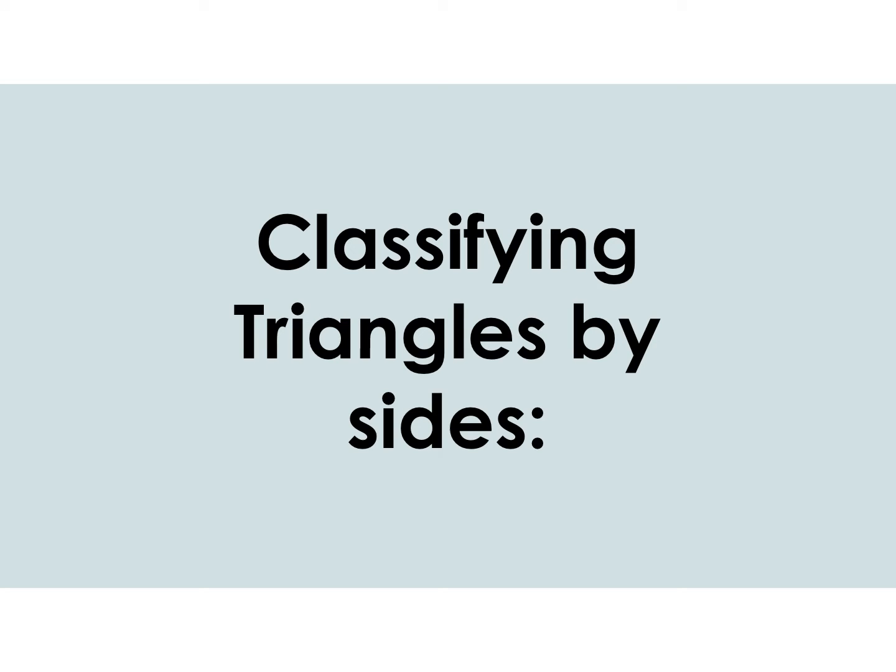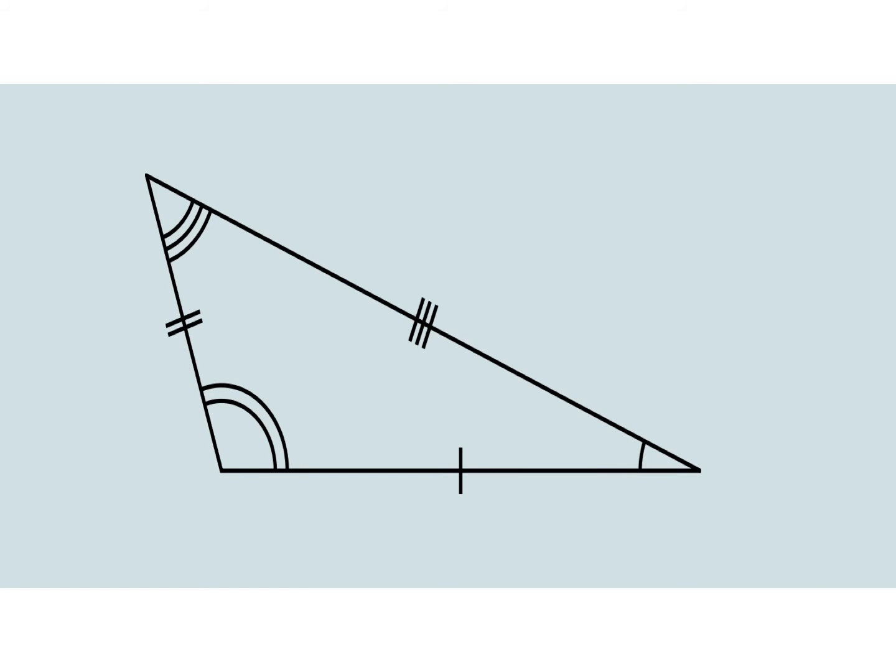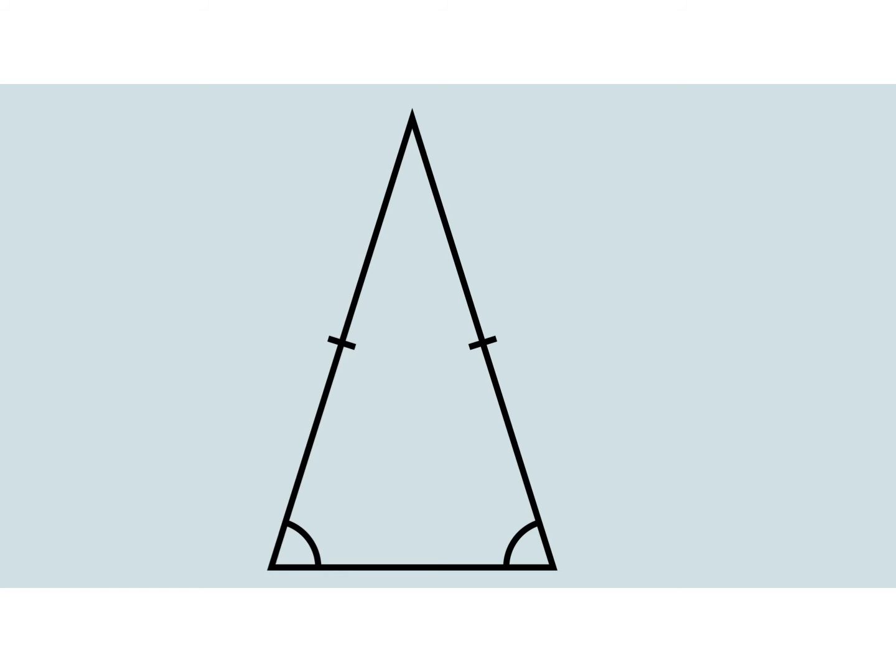Okay, now we're going to be classifying triangles by their sides. Remember we classify triangles and all two-dimensional shapes by their sides and by their angles. This triangle has three sides that are not equal — how would we label this triangle? This triangle has two sides that are congruent — so how would we label this triangle?